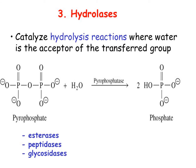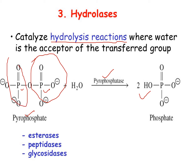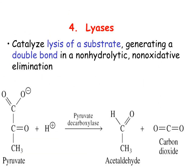The next class is hydrolases — enzymes that catalyze hydrolysis reactions. In the example, pyrophosphate, which has two phosphate groups linked by oxygen, is hydrolyzed by the enzyme pyrophosphatase and converted into two separate phosphate molecules. Other examples of hydrolases include esterases, peptidases, and glycosidases.